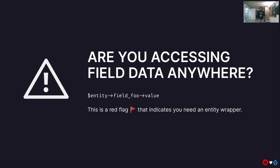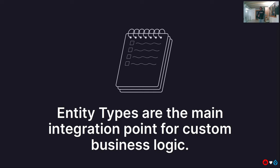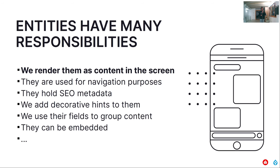Another hint: if you are accessing field data from anywhere that is not the book class or the relevant entity class, that's a red flag indicating you need to put it in what's called an entity wrapper. Bear in mind this only applies to entities — that's why it's called Typed Entity. Even so, entity types are the main integration point for custom business logic, so you're probably covered 80–90% of the time with this approach.